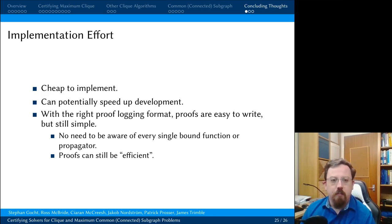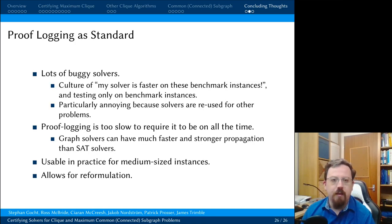So, concluding thoughts. Proof logging is very cheap to implement compared to implementing a solver. It can even potentially speed up development. And with the right proof logging format, proofs are very easy to write but still simple. We do not need a proof log to be aware of every single bound function or propagator. And we can still have proofs that are in some sense efficient. So there are no exponential blow-ups here. All the proofs we generate are in some sense proportional to the amount of work done by the solver. We think it's time for proof logging to become a new standard. For a lot of buggy solvers, there's a culture of my solver is faster on these benchmark instances, so you should publish my paper. This is particularly annoying when solvers are reused in other areas and people have to deal with these buggy solvers.